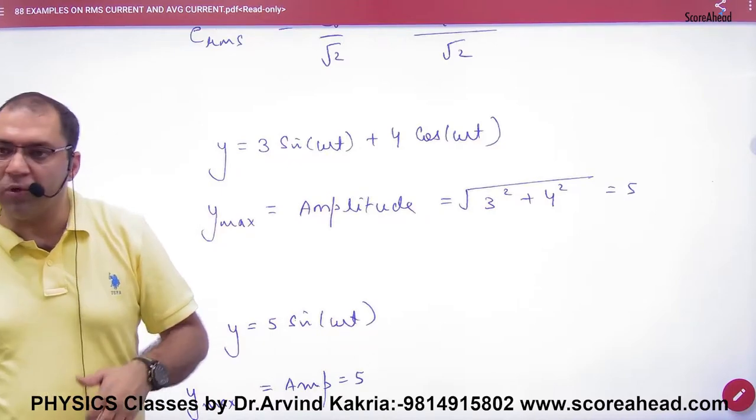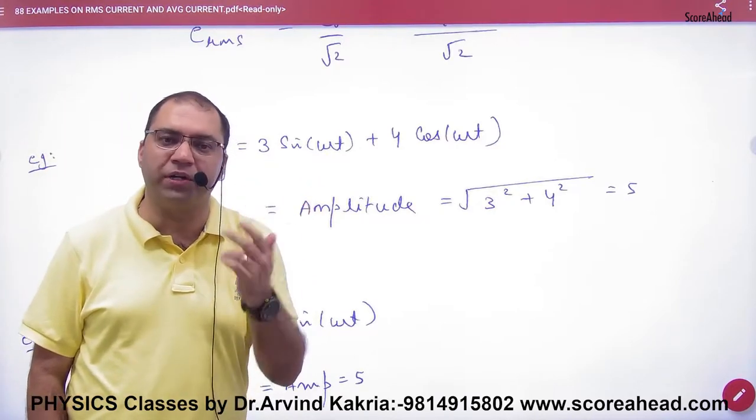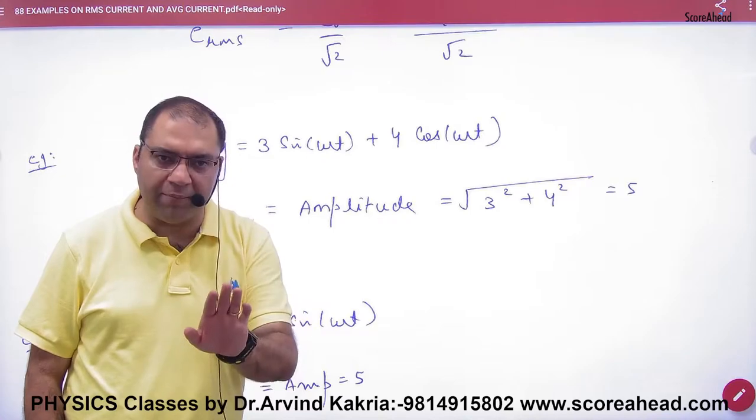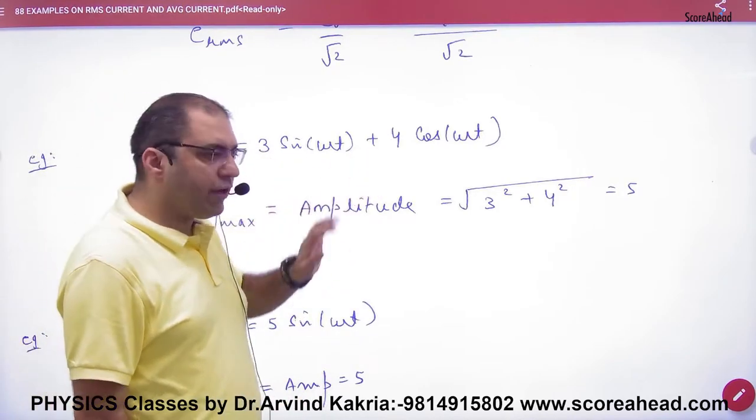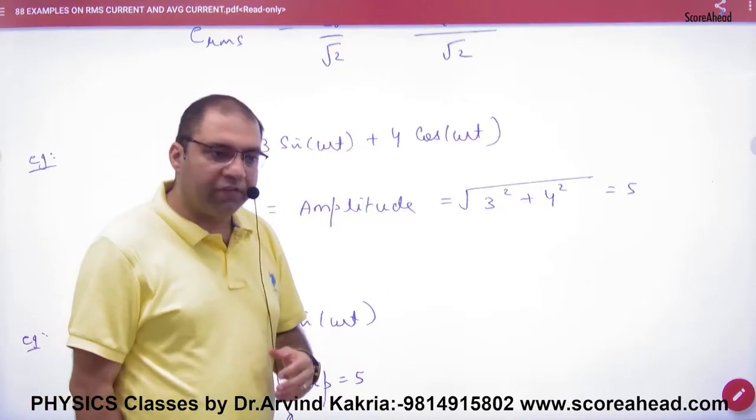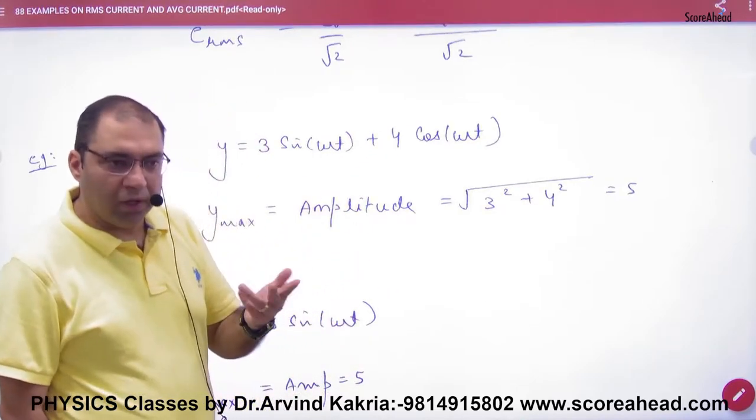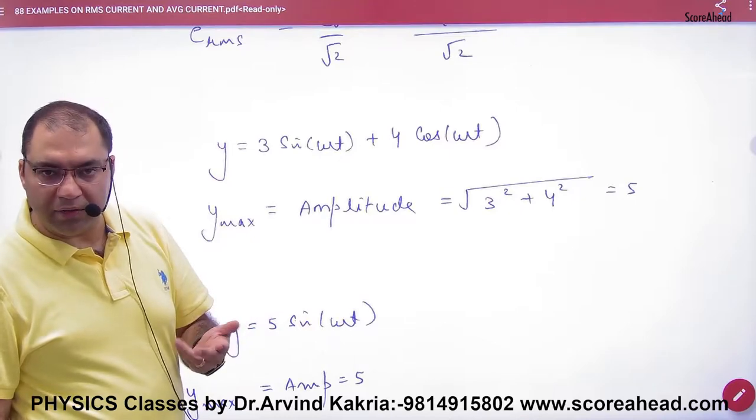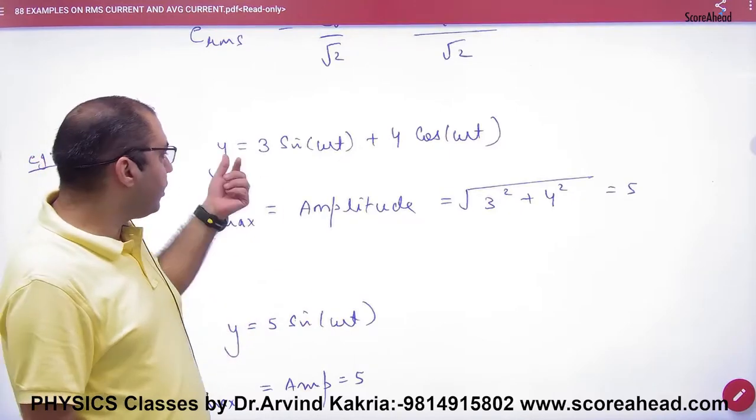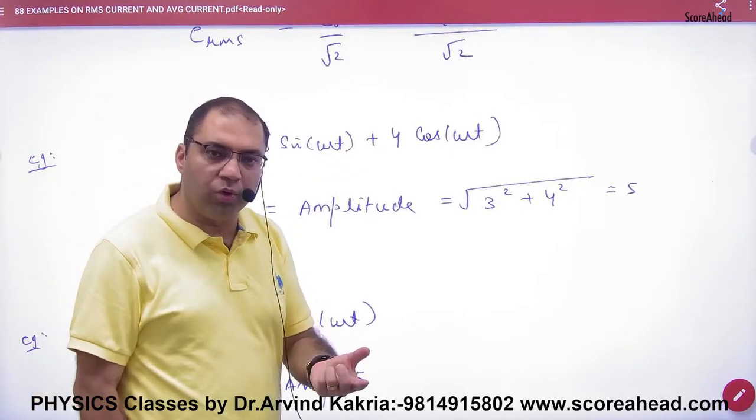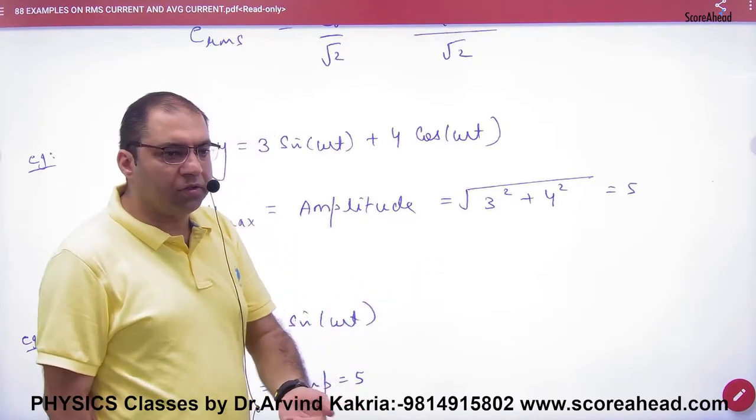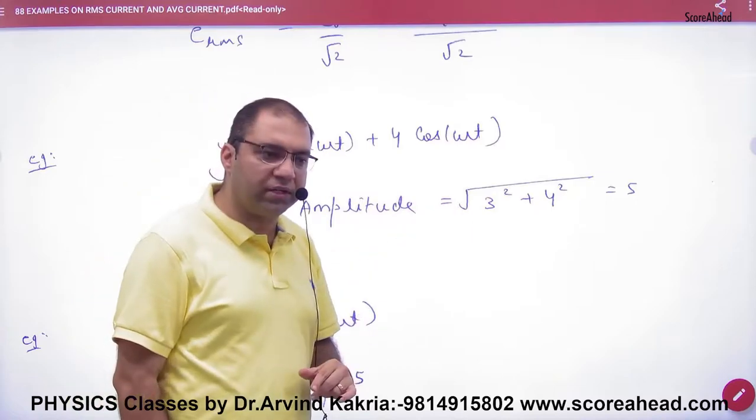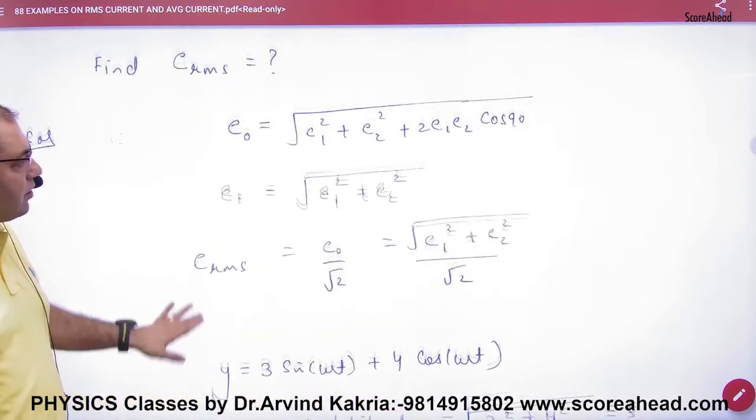People ask how do you remember? Y is a vector quantity. If one vector has value 3 and one has value 4, with sin and cos having 90 degrees phase difference, what will the net value be? Under root of 3² + 4² + 2(3)(4)cos(90). Cos(90) is 0, so the answer is 5.